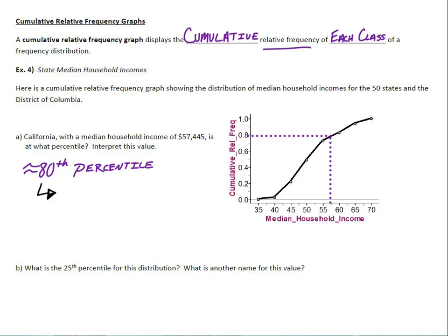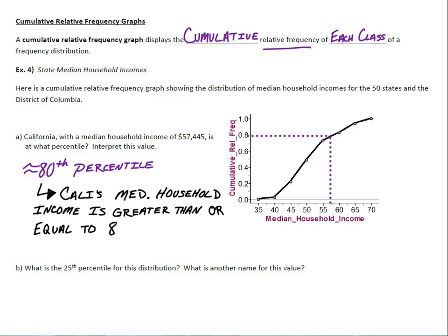So let's interpret this. If California is at the 80th percentile, that means that California's median household income is actually greater than or equal to 80 percent of all states, including D.C., by the way.